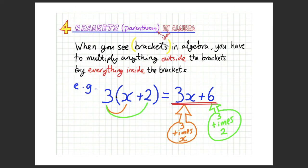So for example, if you see a 3 with a bracket and then x plus 2, it means 3 times everything in that bracket. So 3 times x, giving you 3x, and 3 times 2, giving you 6.